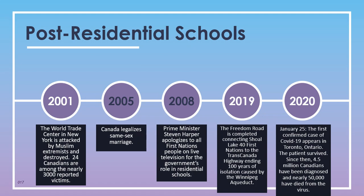Finally, on January 25th, 2020, the first confirmed case of COVID-19 appeared in Toronto, Ontario — the patient survived, but since then 4.5 million Canadians have been diagnosed with the virus and nearly 50,000 have died from it. That is my quick overview of Canadian history from the first arrival of indigenous people to the modern day. There's a lot of interesting history in this country considering how brief we've actually been a world nation, and as we go through the course we will touch on many of these events in more detail.